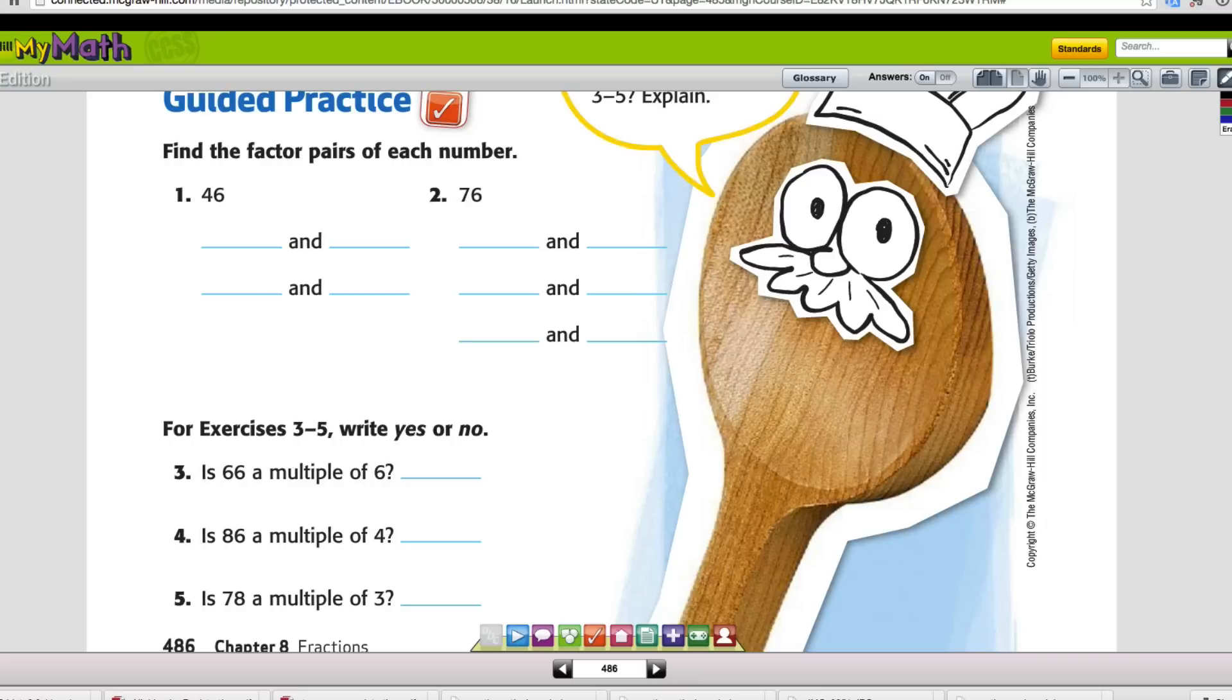Now down to the guided practice. It says find the factor pairs for each of the numbers. We have 46. Well, I see that they're both even numbers. I'm going to say, first 1 and 46 equals that. We're always going to take the easy ones. Just like this one is the 1 and 76. 2 goes into both of those numbers. 2 goes into 4 two times and 6 three times. So we know that 2 times 23 also equals 46.